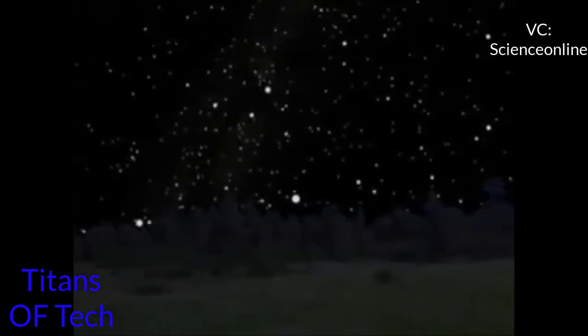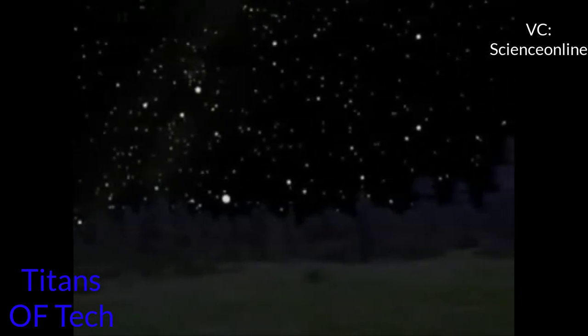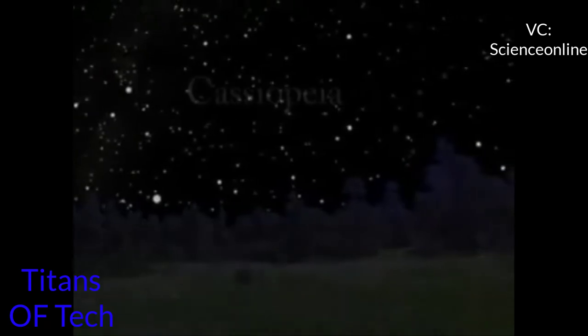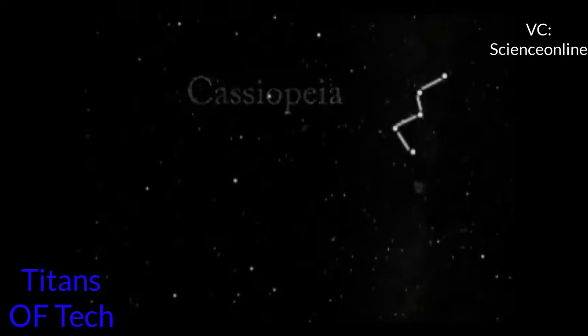To find this deep space object, you need to be able to find and recognize two constellations, Cassiopeia and Pegasus. Cassiopeia, from Greek mythology, represents Queen Cassiopeia. The constellation forms a distinct asymmetrical W shape with five bright stars.